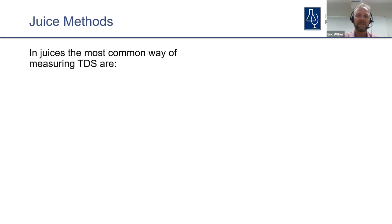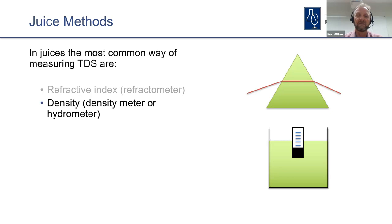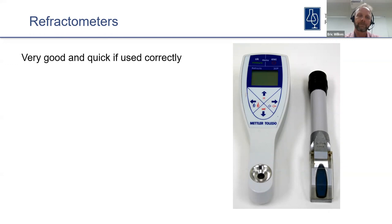There are also other scales such as specific gravity, Oechsle and refractive index, however these are rarely used for monitoring juice ferments in Australia. In juice, the most common ways of measuring total dissolved solids are refractive index — literally measuring how much light bends as it goes through the juice solution — or density, using a density meter or hydrometer where you're essentially seeing how much something will float in that juice. Both methods can give the correct result if used properly.